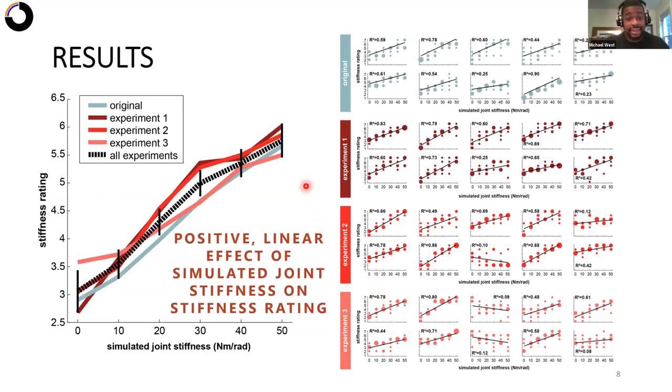And what we found was actually really interesting, right? So we hypothesized that manipulations of the velocity curvature relationship would affect subjects' ability to estimate stiffness, but what we found was the opposite. It did not. So subjects were still able to increase their stiffness ratings based off of the simulated joint stiffness, despite these velocity manipulations.